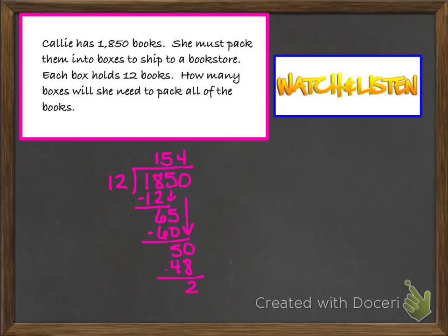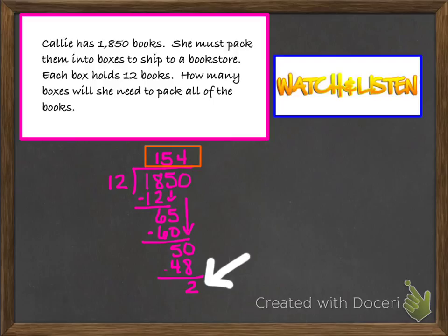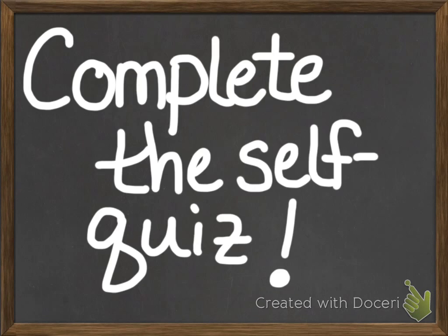Remember, the question asks how many boxes will she need to pack all of the books. She's going to need 154 boxes. But keep in mind she also has 2 left over, and those won't fit in the 154 boxes — so basically you need 154 boxes and you're going to have some leftover books. Be sure to complete the self-quiz. The link to the self-quiz is going to be directly beneath the link on Canvas that you clicked to get to this video, and it will say 'self-check multiplying or dividing multi-digit decimals.' Alright, that's it for now — we'll see you back.